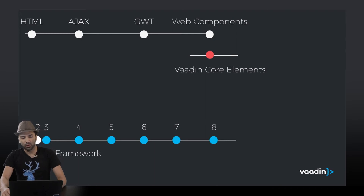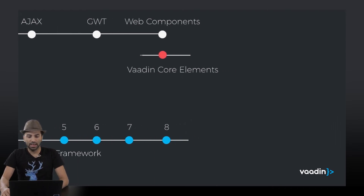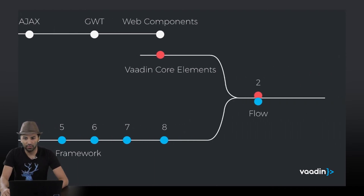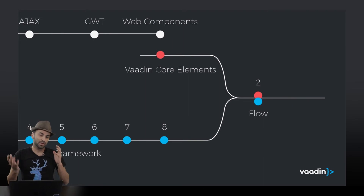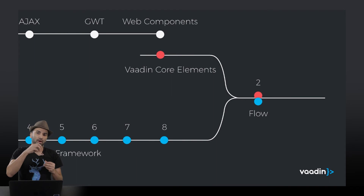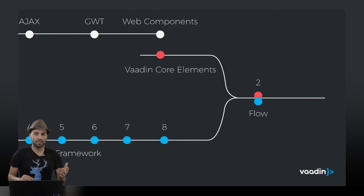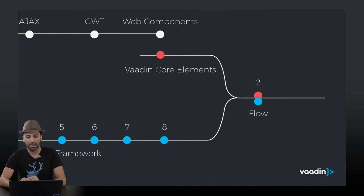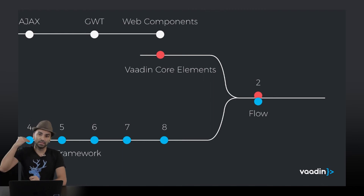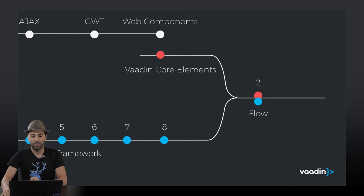Now, moving forward, we created something called Flow, which is a framework that is going to rely on the VADEN core elements and some other web components instead of JWT at all. That's basically, you can think about it as the evolution of our framework.